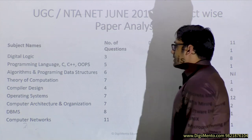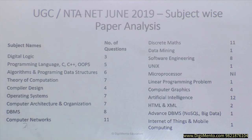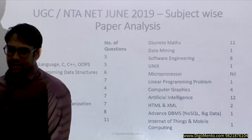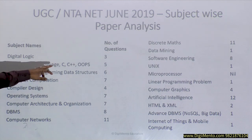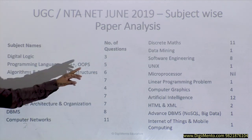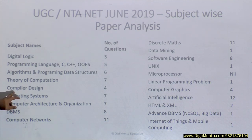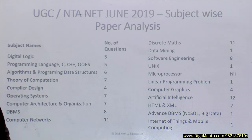Out of all these subjects, there are few subjects that you can leave in your preparation. I'm not going to focus on those subjects initially, but if we have time in the end, we will cover them. From the June 2019 analysis: digital logic had around 3 questions, programming languages like C, C++ and object-oriented programming had 5 questions, data structures and algorithms had 6 questions, and theory of computation had 7 questions.